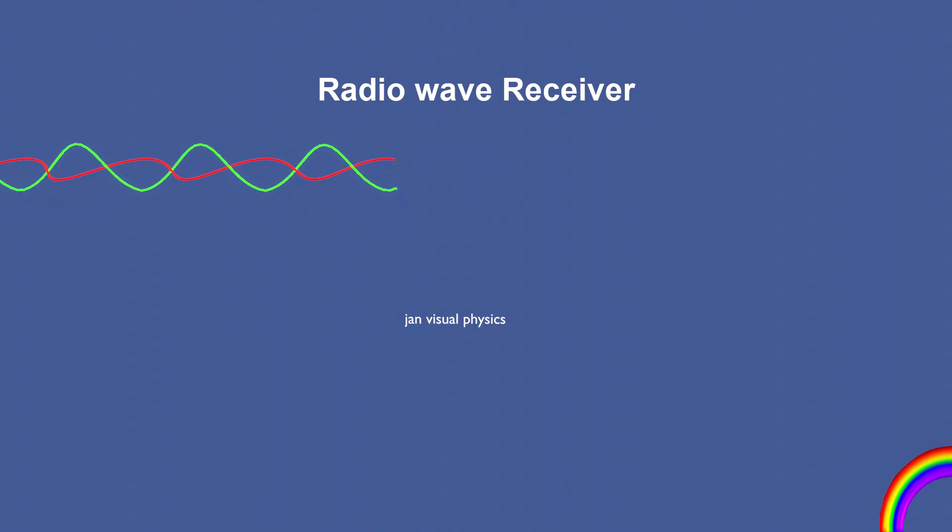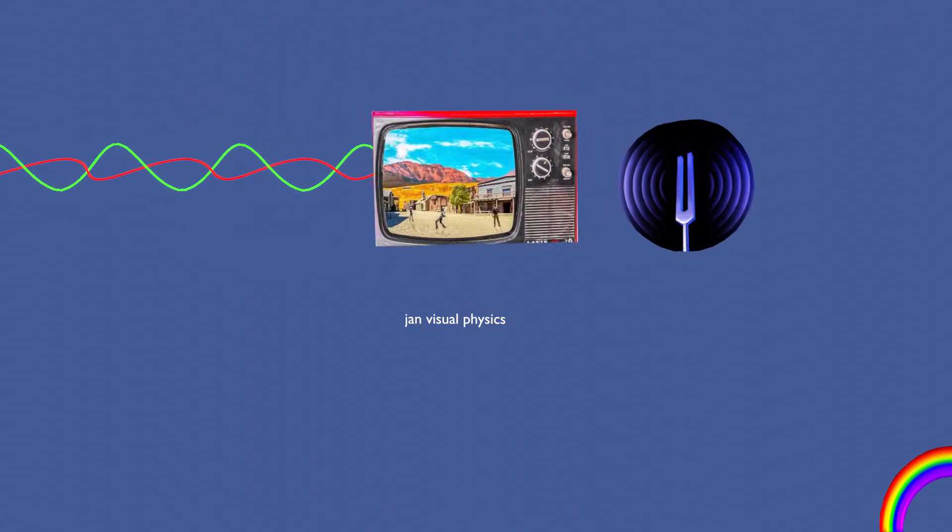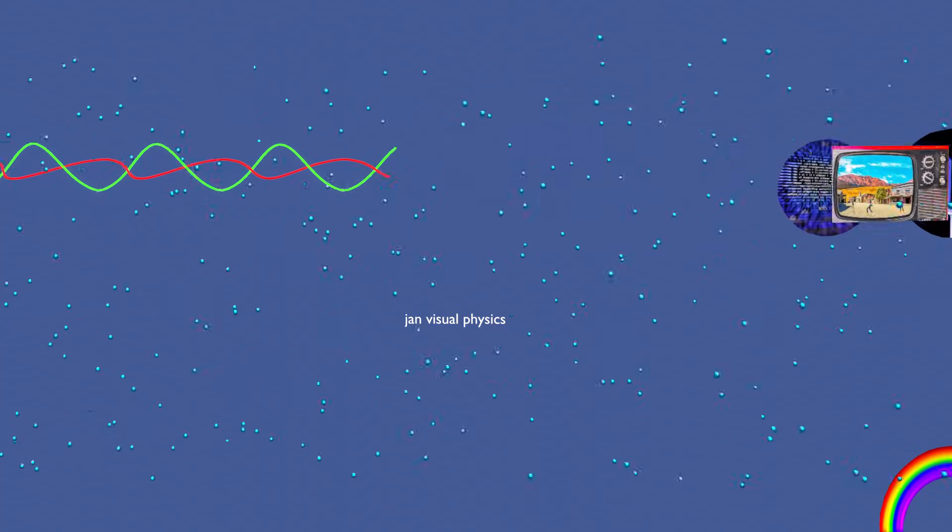Electromagnetic waves carry information such as sound, video, or digital data through the air without the need for a medium.